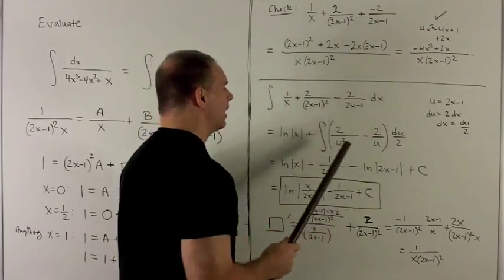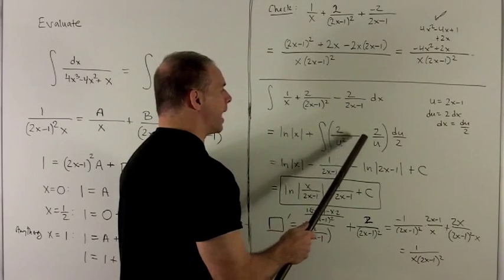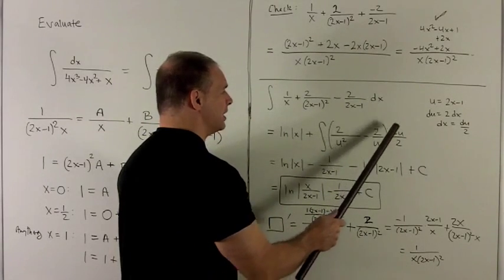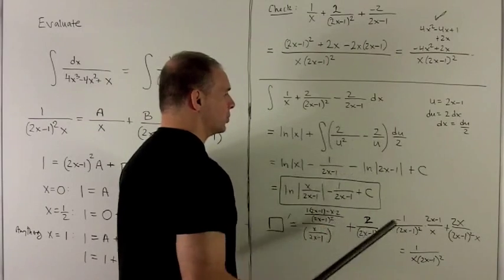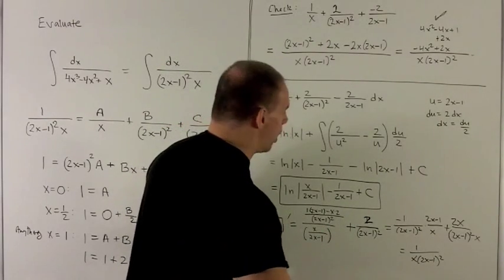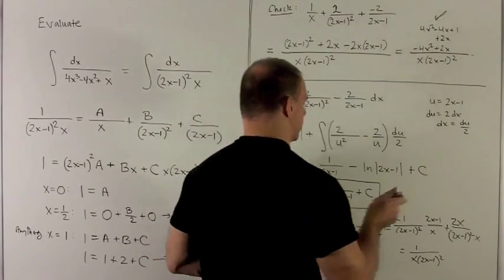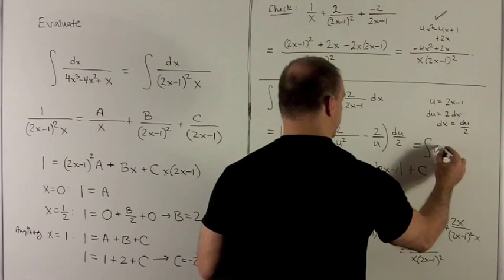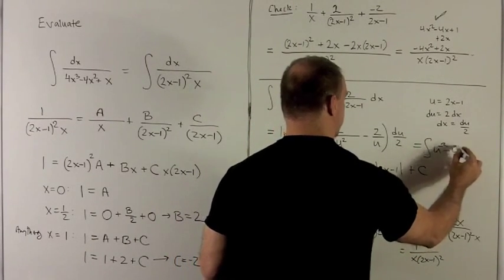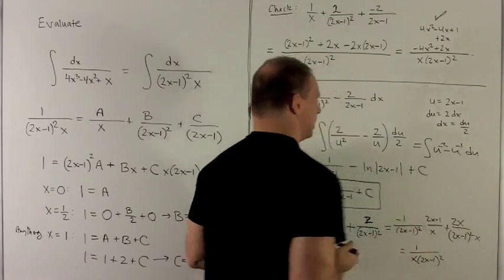I substitute in. I have 2 over u squared minus 2 over u times du over 2. And you notice the 2's all go away. So all I'm looking at now is u to the minus 2 minus u to the minus 1 du.